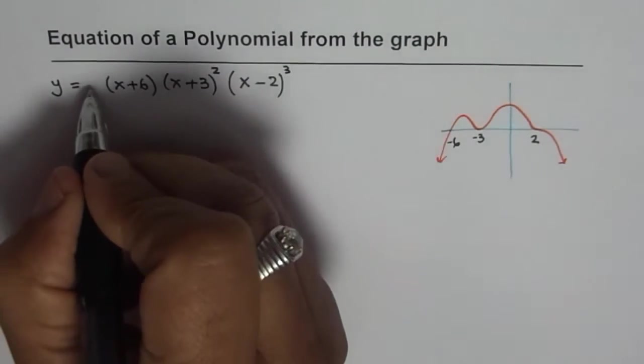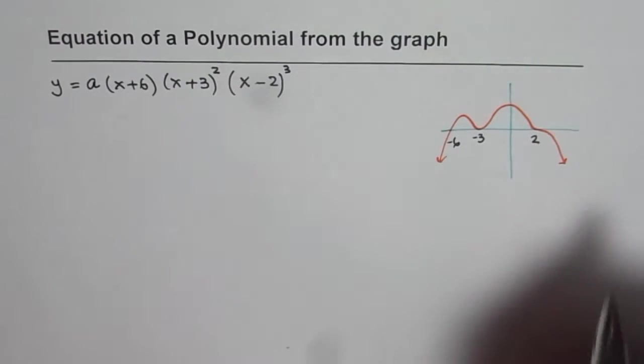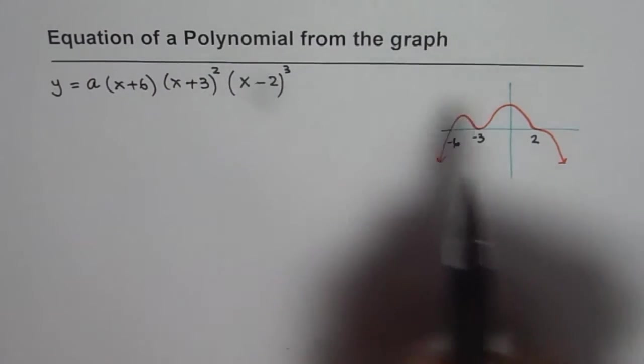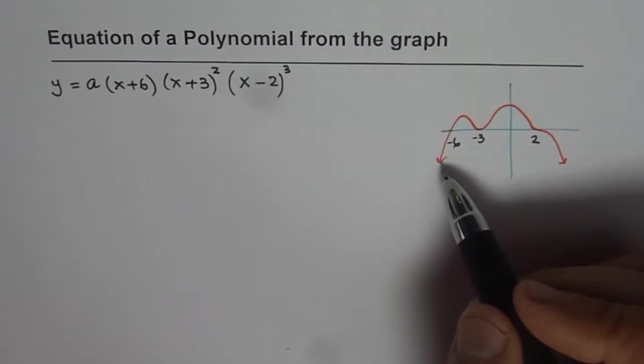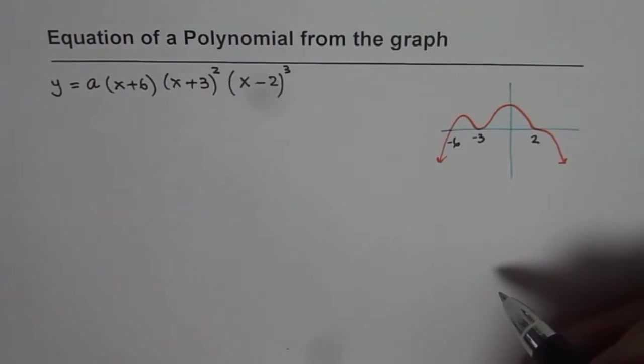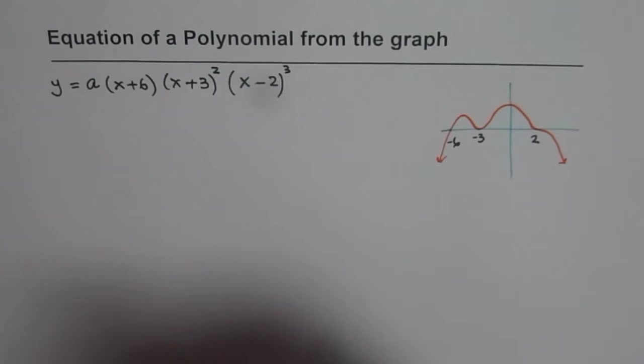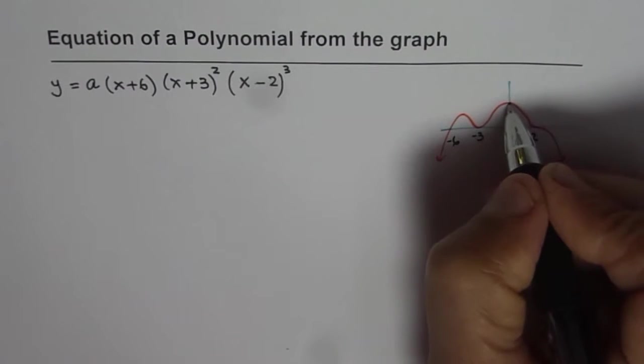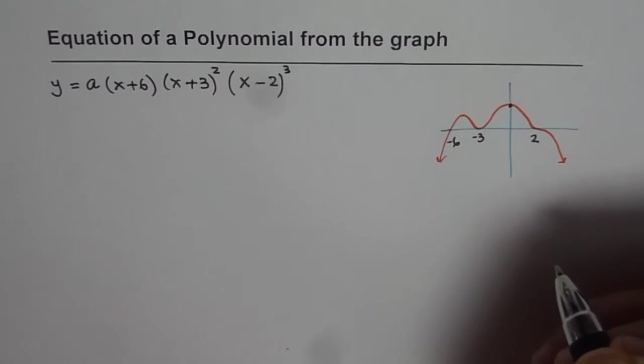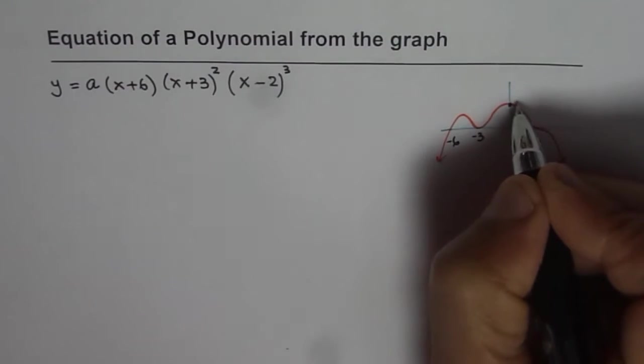So we are assuming the value a here to give you the value family of graphs of polynomials which will represent like this, a graph. Now how to get the value of a? For that we need a point on the graph. Let us say y intercept is known to us and this value is, let us say 2 for us.